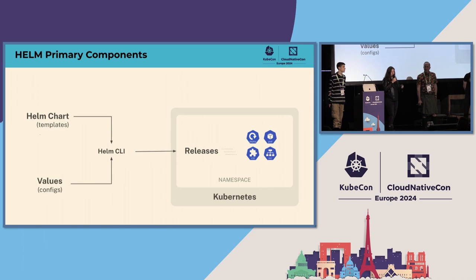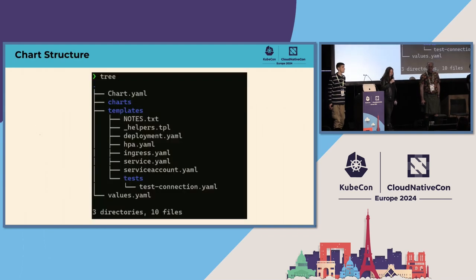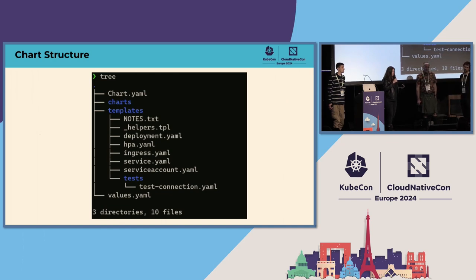Let's look at the primary components. You have your Helm chart, your values config, and then using the CLI we can release your chart. Let's look at the chart structure — it's like a tarball — and these are the files we're going to look at. The real meat of this is going to come from the panel.